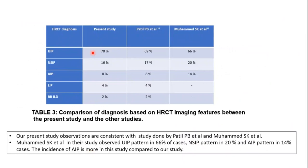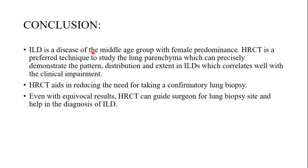The observations in our study were comparable with other studies, like those done by Patel et al. and Mohamed Eskay et al. In all these studies, usual interstitial pneumonia was the most common, followed by NSIP and AIP.